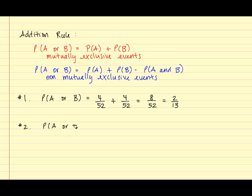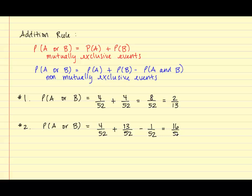To find the probability of A or B using the second formula: the probability of A is 4 out of 52, plus the probability of B, which is 13 out of 52 because we have 13 clubs in a deck, minus the overlap of 1 out of 52. We subtract out the overlap because in probability things cannot be counted twice — the king of clubs was counted in both the first and second probability. By subtracting out the overlap, we count the king of clubs only once. Once we simplify, we obtain 16 out of 52, which reduces to 4 over 13.